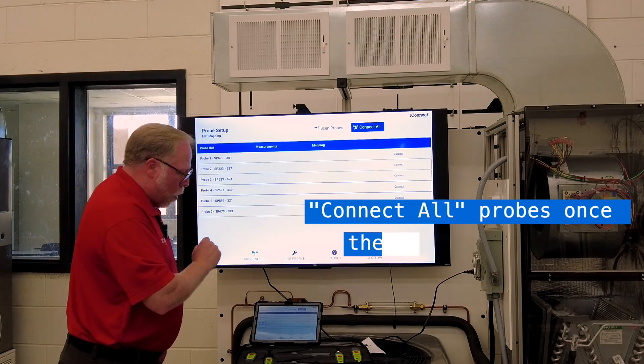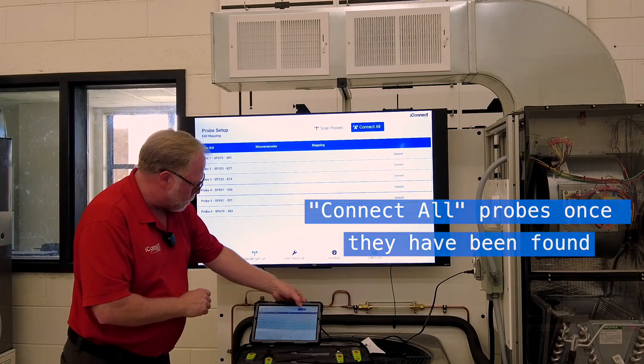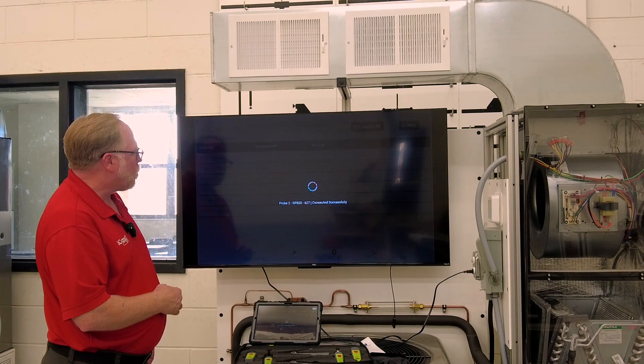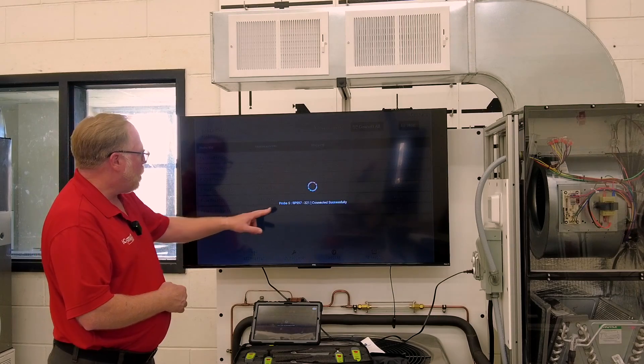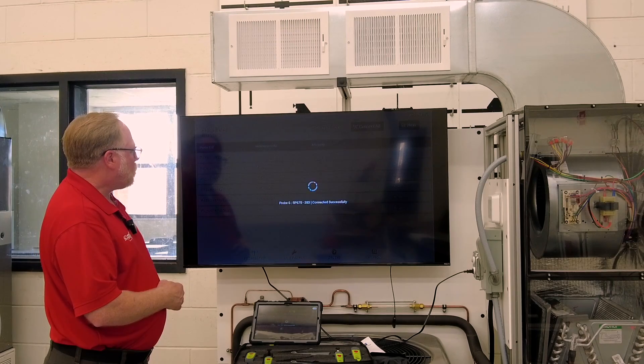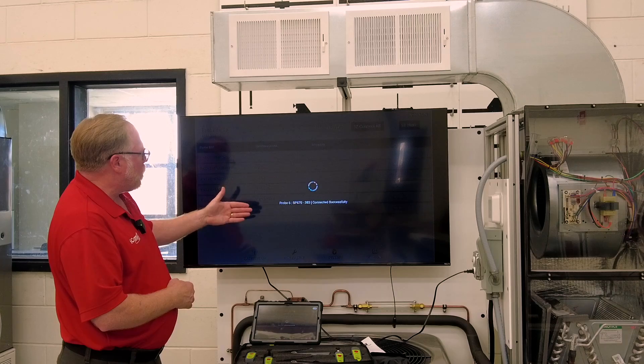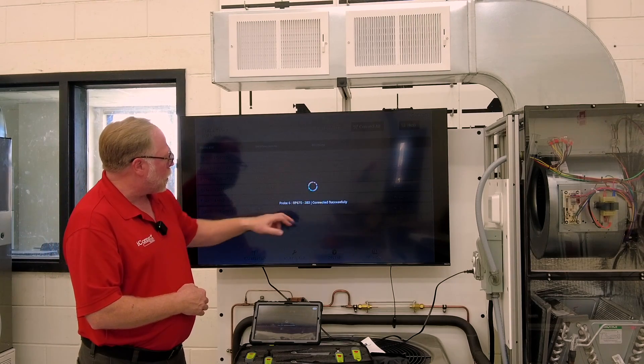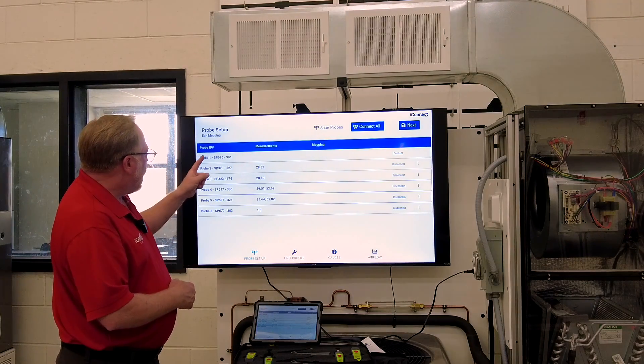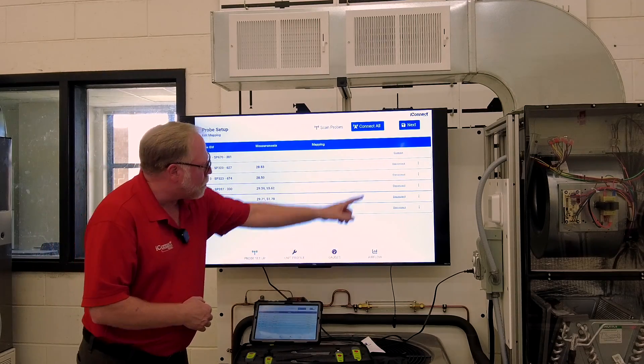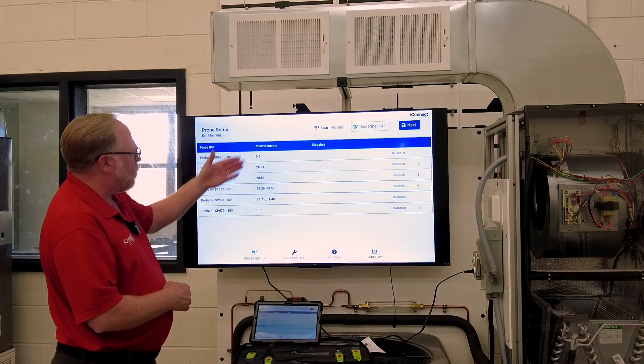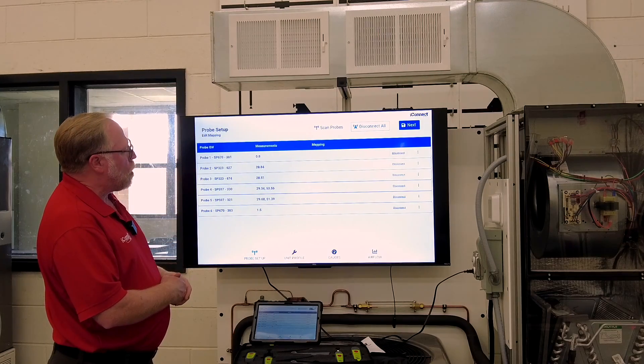Now I'm going to connect them all now that they've been found. And you can see here, it's starting to connect to all of them successfully. Now, once it finds all of them and if it stays in this little circle here and you notice that it's not adding any more probes, just tap your screen of your tablet and look and it did not find probe number one. That's no problem. I'll just come over here and I'm going to hit connect and it's going to look for that one by itself and it found it. So now all six probes are connected.